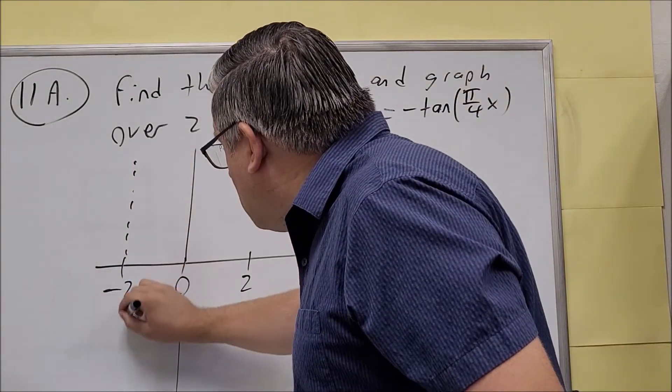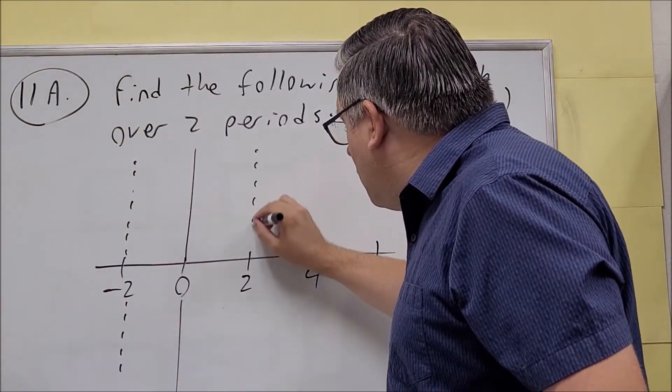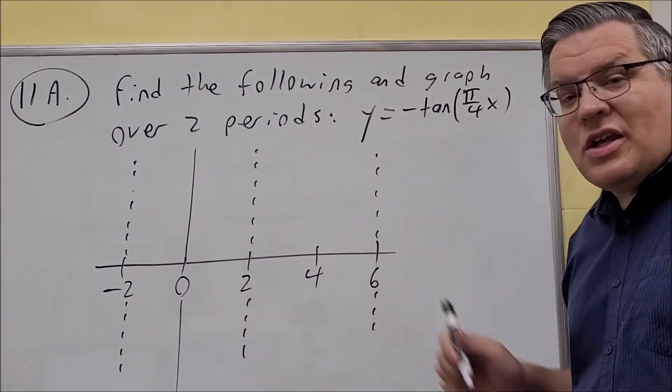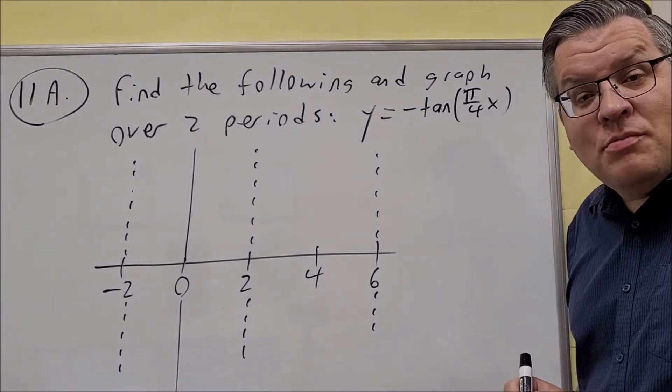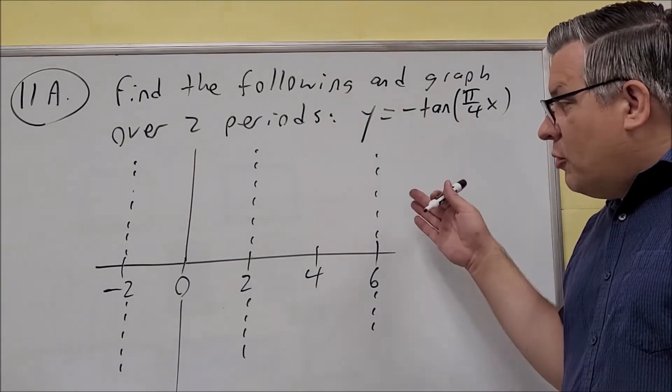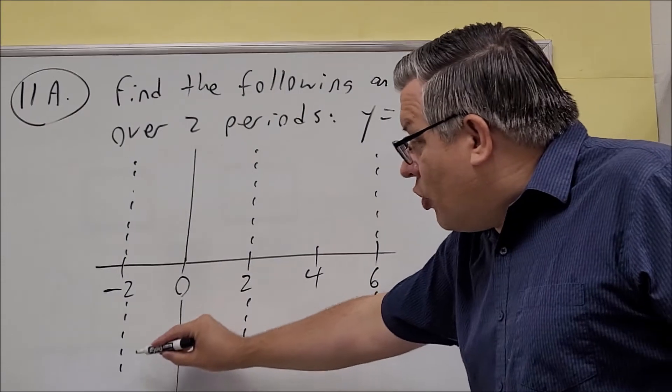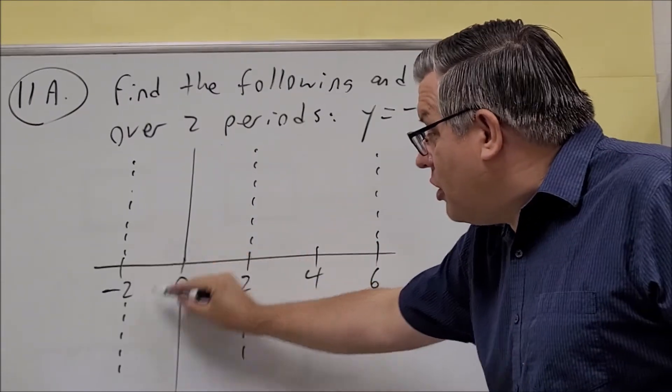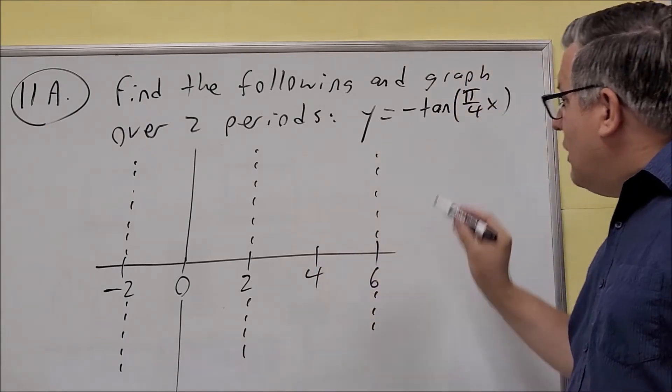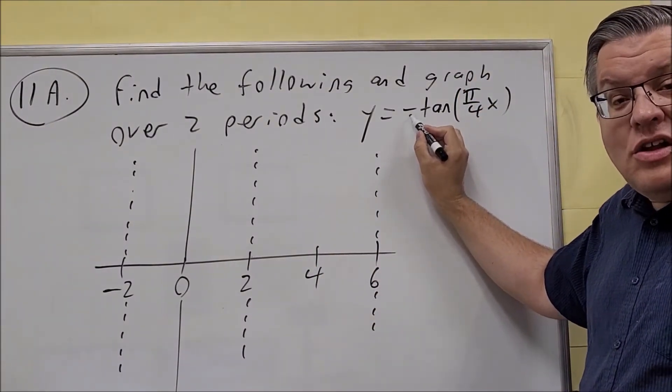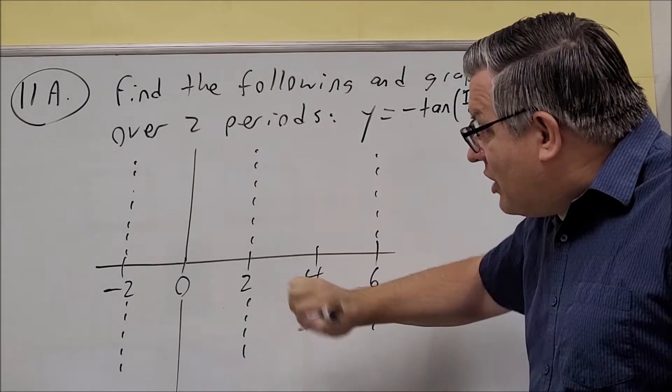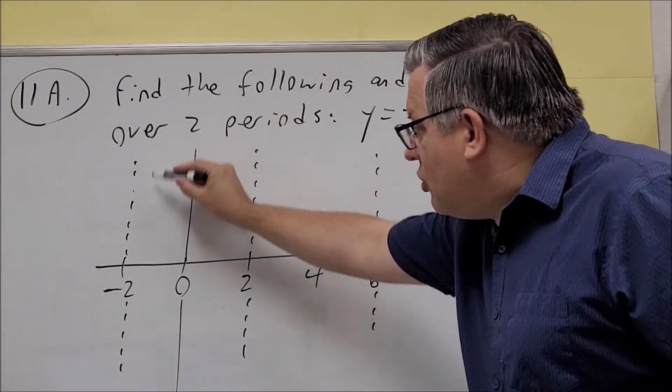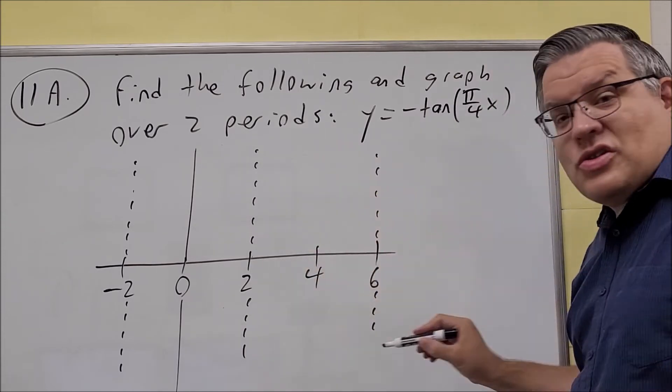The first, third, and fifth key points get the vertical asymptotes. Now normally, the tangent graph rises as you go from left to right. However, we have a negative here. The negative flips the graph and makes it fall instead. So the graph does this kind of motion.